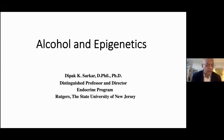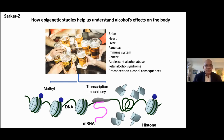Hello, everybody. Thank you for attending my presentation on alcohol and epigenetics, which is a rapidly growing field and also an important aspect of my group's research focus. Alcohol, particularly drinking a high quantity, has a major effect on varieties of body functions — it affects brain, heart, liver, pancreas, immune system, and cancer, as well as various age groups like adolescent alcohol abuse, fetal alcohol syndrome, and preconception alcohol. My focus primarily is to understand how alcohol use disorder affects the epigenetic system.